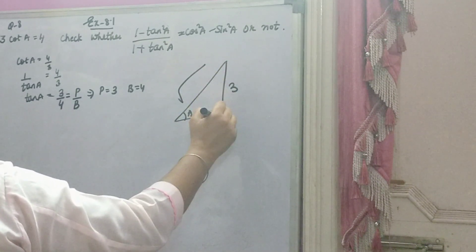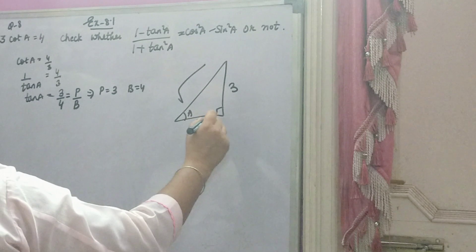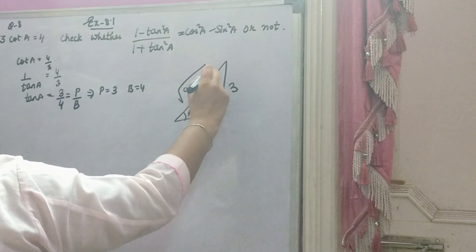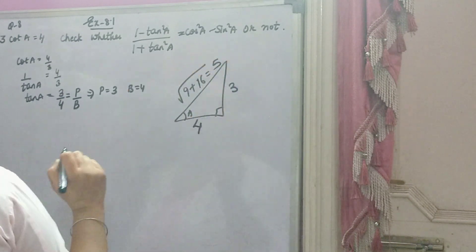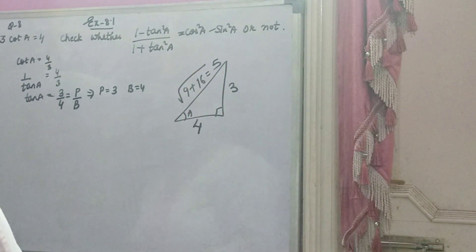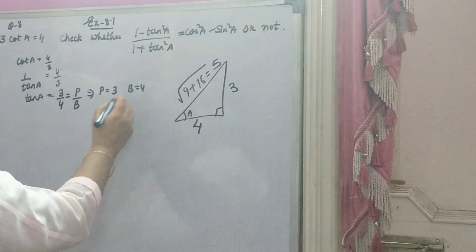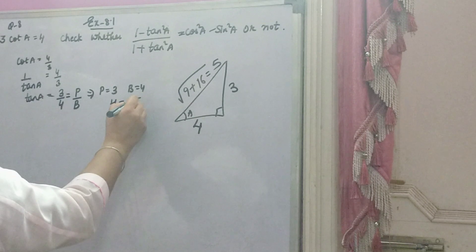Hypotenuse kya hota hai? Square of perpendicular plus square of base ka under root. Means, 3 ka square 9, plus 4 ka square 16. Means, root of 25, that is 5. Toh, aap ka hypotenuse 5 a gaya. Tan A ki value 3 by 4. Perpendicular 3, base 4, and hypotenuse 5.